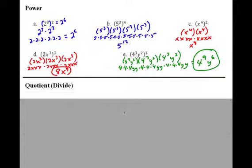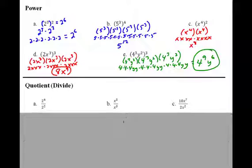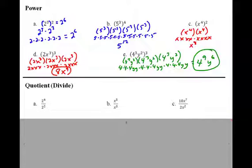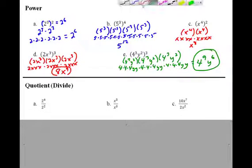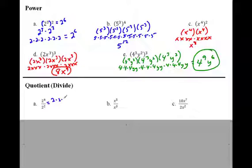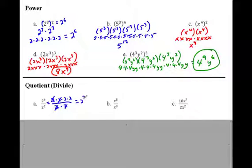One more of these and then we're done. Quotient means divide — so can we do it with division? Yes, we can. Let's expand it. 2 to the 4th is 2 times 2 times 2 times 2 on top. On the bottom it's just 2 times 2. Does anything simplify? Yeah, it does — we can cancel. Since it's all multiplication, this 2 cancels this 2, this 2 cancels this 2. What's left? 2 times 2, which is 2 squared — or if you want to say 4, you can say 4.